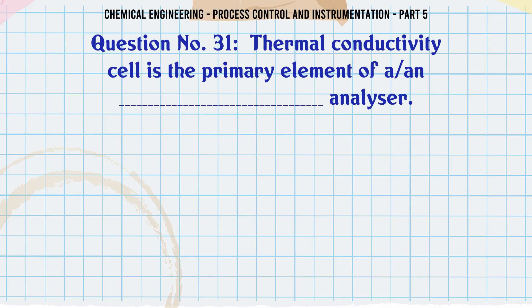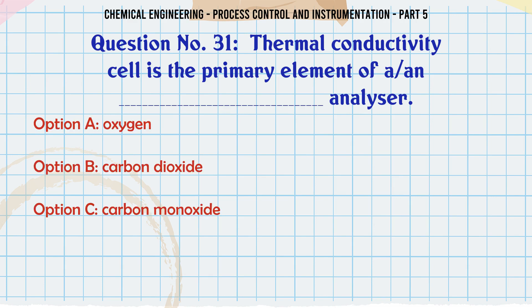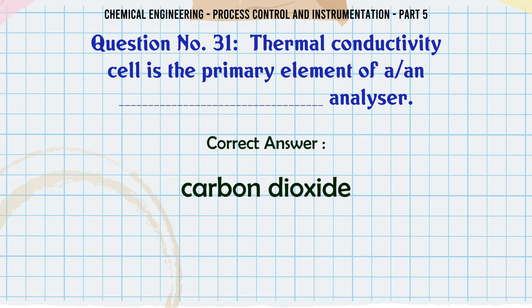Thermal conductivity cell is the primary element of an analyzer: A. Oxygen. B. Carbon dioxide. C. Carbon monoxide. D. Sulfur dioxide. The correct answer is Carbon dioxide.